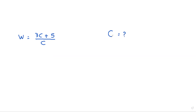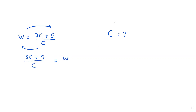The first step: we can switch sides and write 3c plus 5 over c equals w. Then to eliminate the c in the denominator, we multiply both sides by c. Multiply by c here and here — cancel c and c.